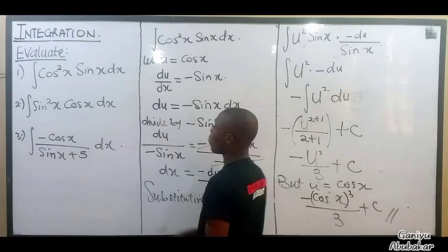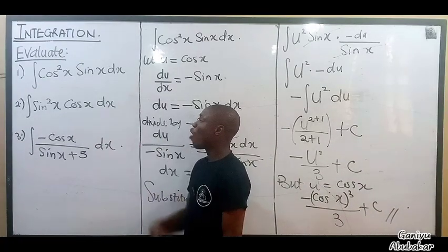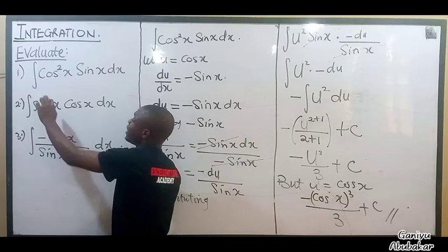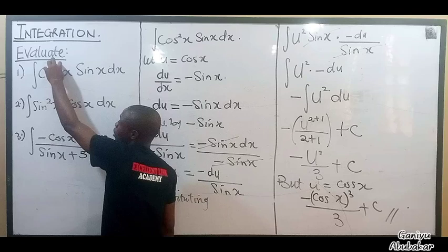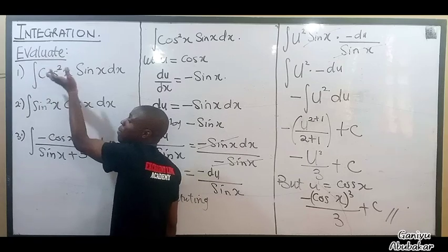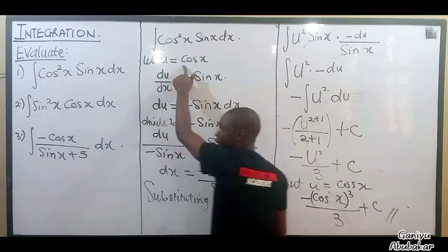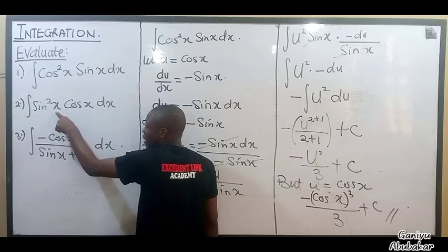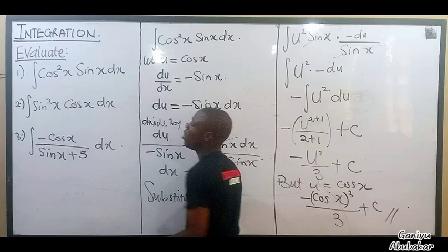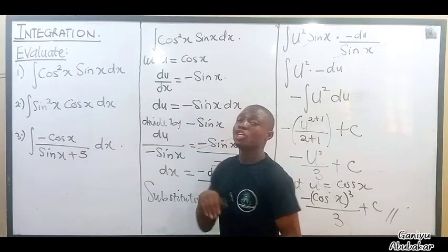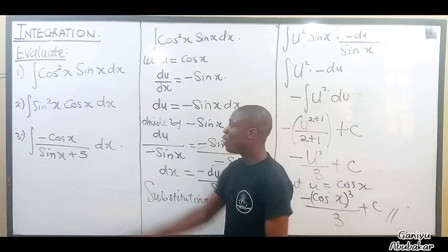For this problem, I chose u to be cos x because cos x is the inner function that was squared. With cos x and sin x present, the key part was cos x, and that's why I set u equal to cos x. I'll skip number 2 — drop your answer in the comments below. Let's now do number 3.